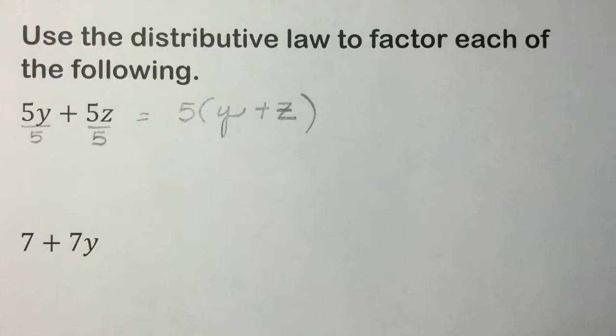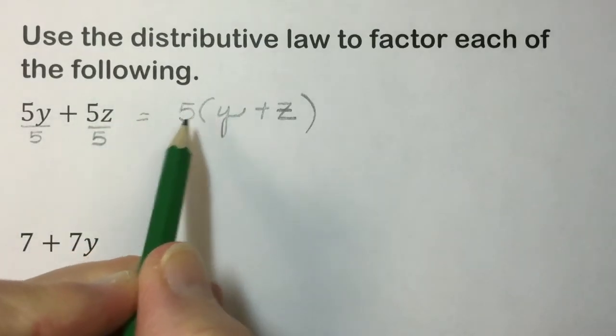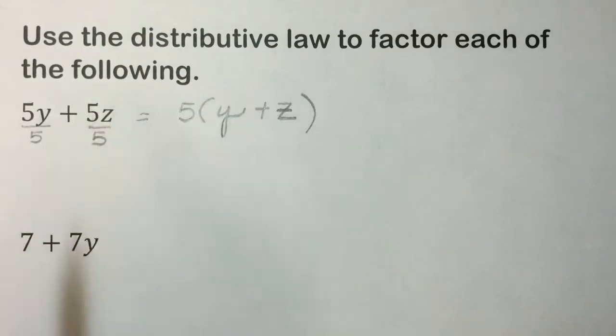And if you check this using the distributive law left to right, 5 times Y is 5Y, 5 times Z is 5Z. We have the expression that we started with.